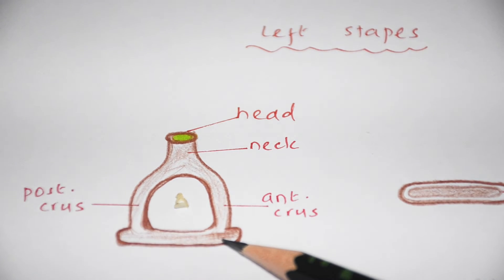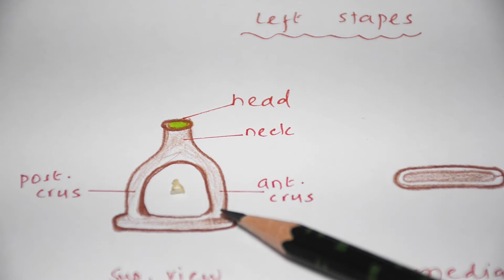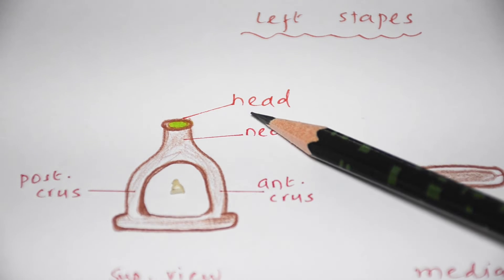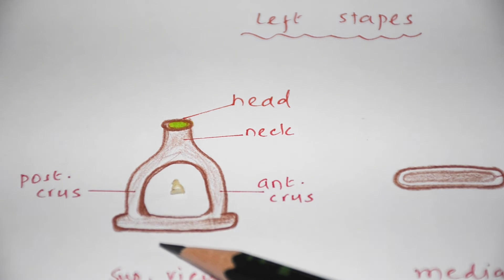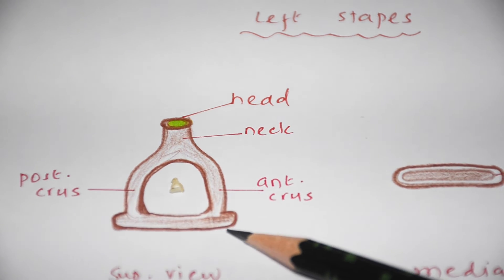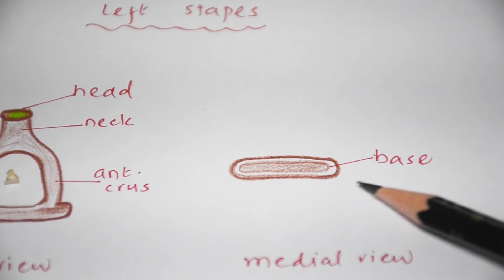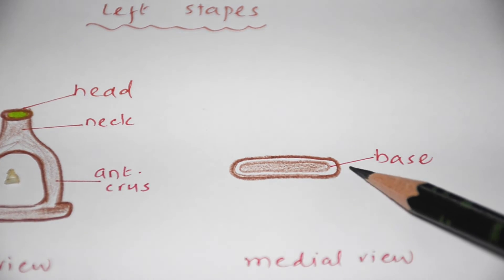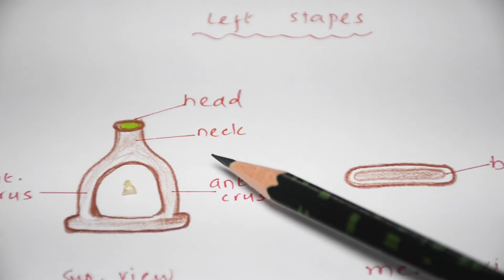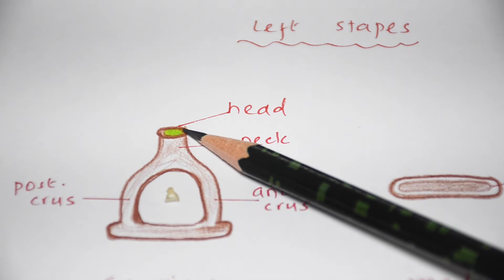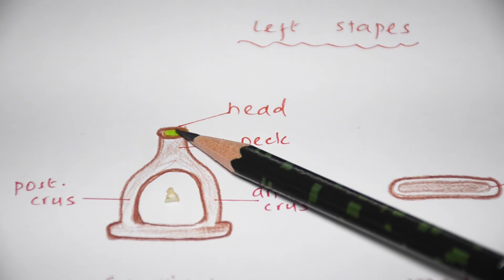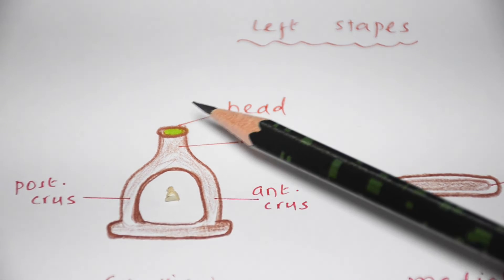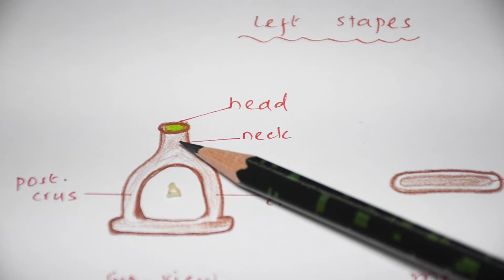This is the left stapes — you can correlate its size with the scale. In this diagram showing the superior view of left stapes, it has a head, a neck, two crura (anterior and posterior), and a footplate or base. The base is clearly visible in the medial view and is reniform in shape. The head has a depression that articulates with the lentiform nodule of the incus, forming the incudostapedial joint — a ball-and-socket variety of joint.